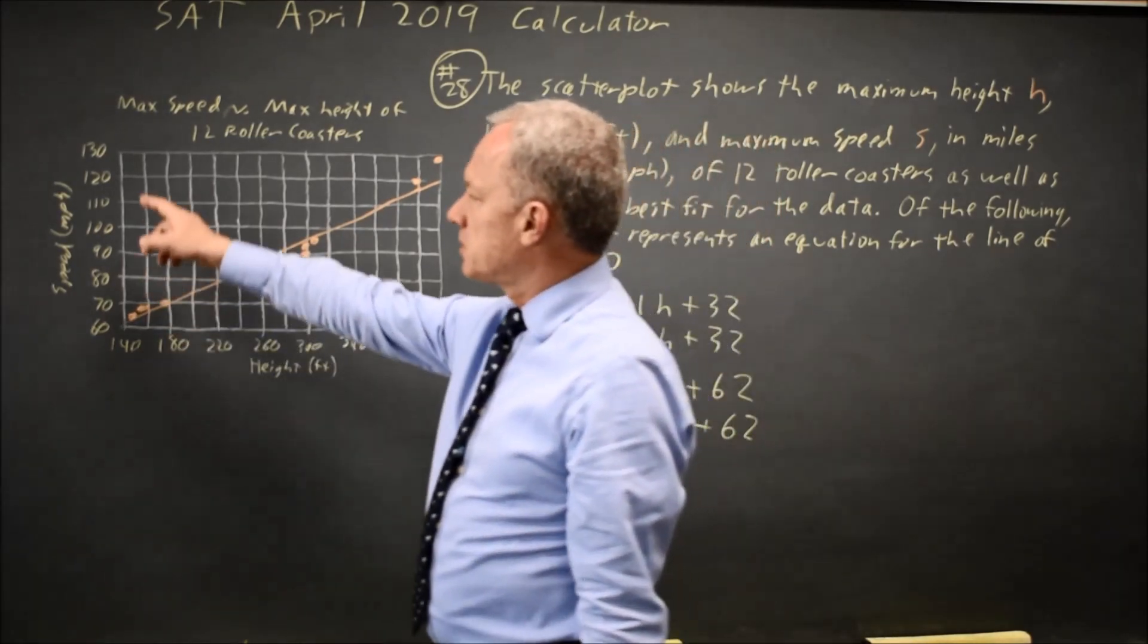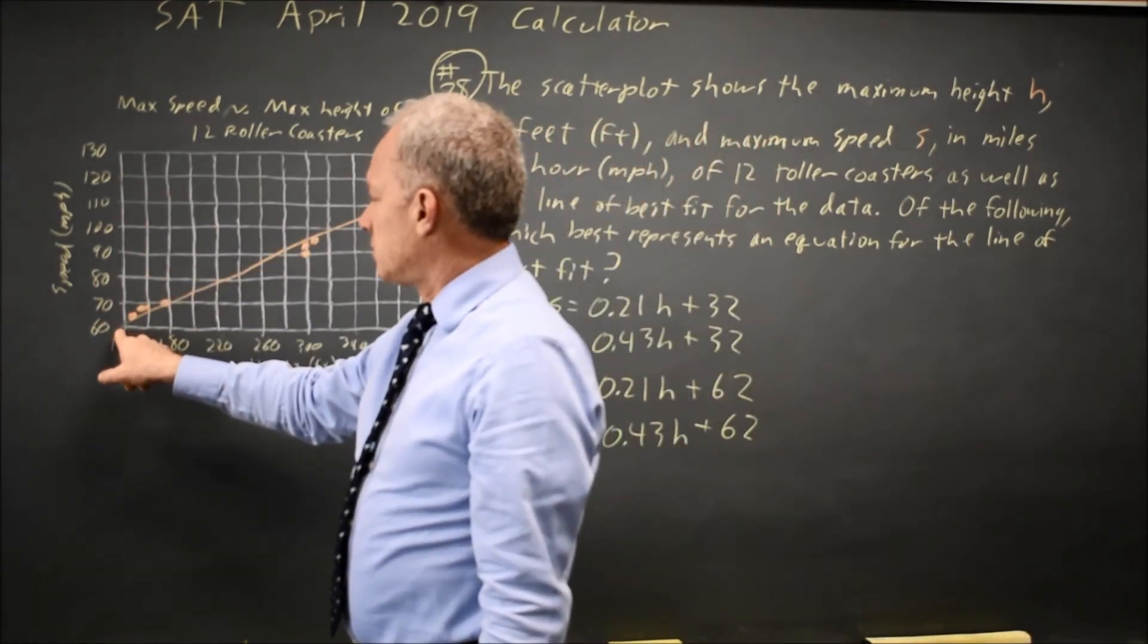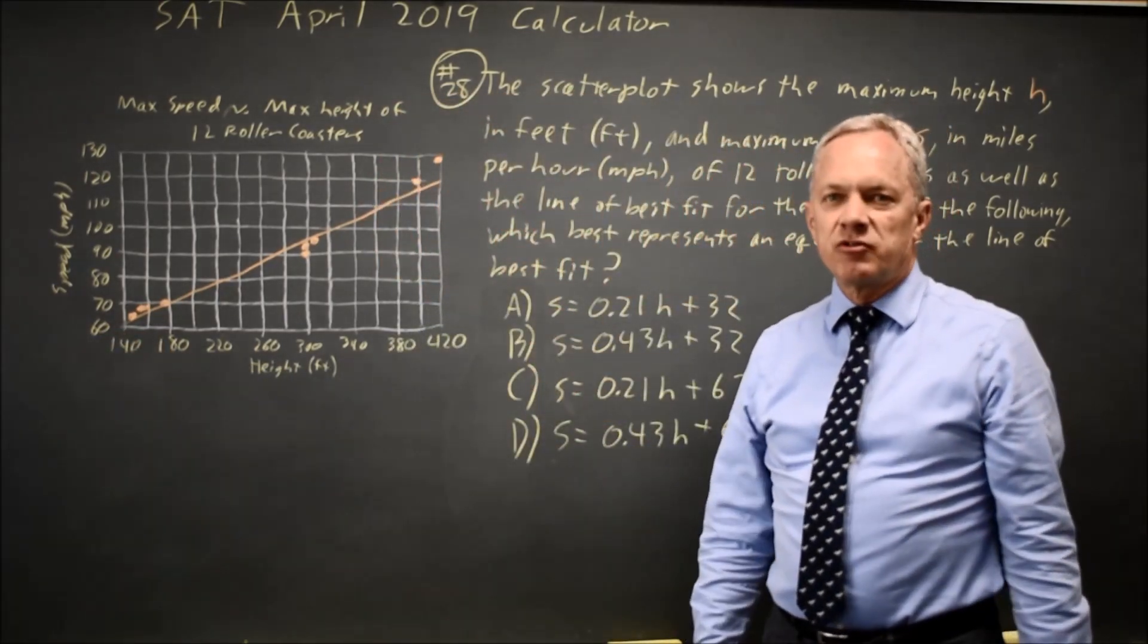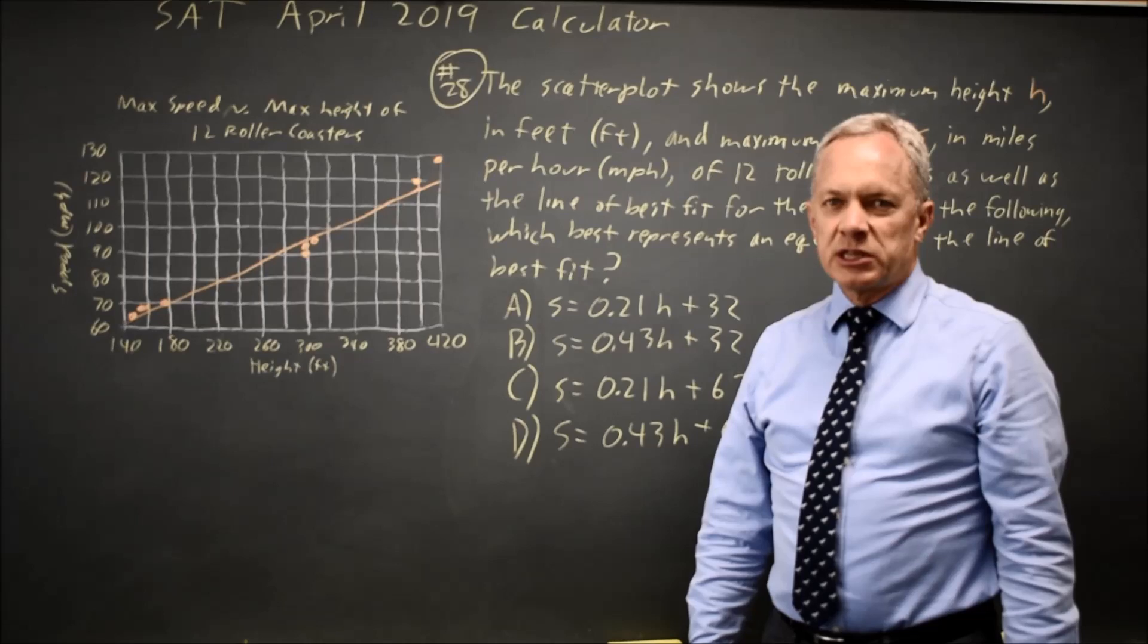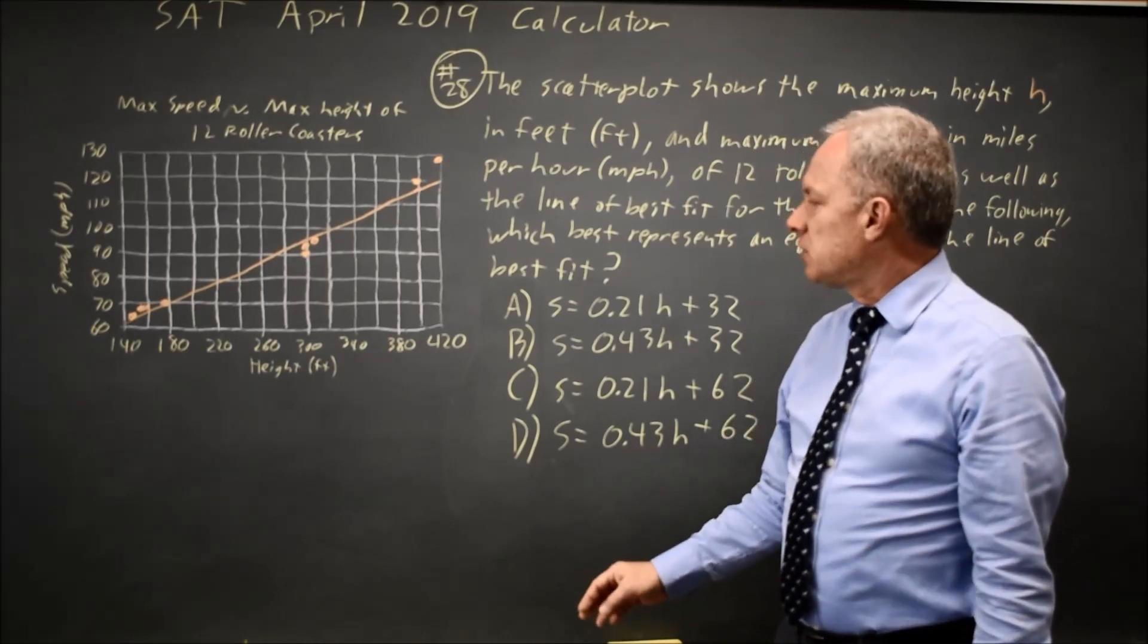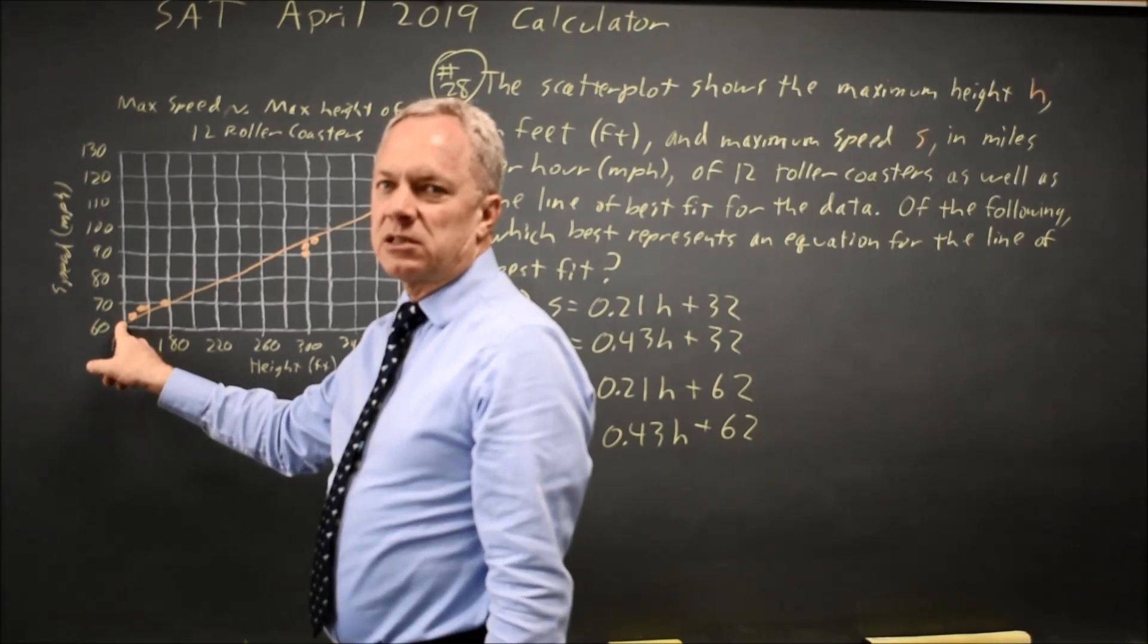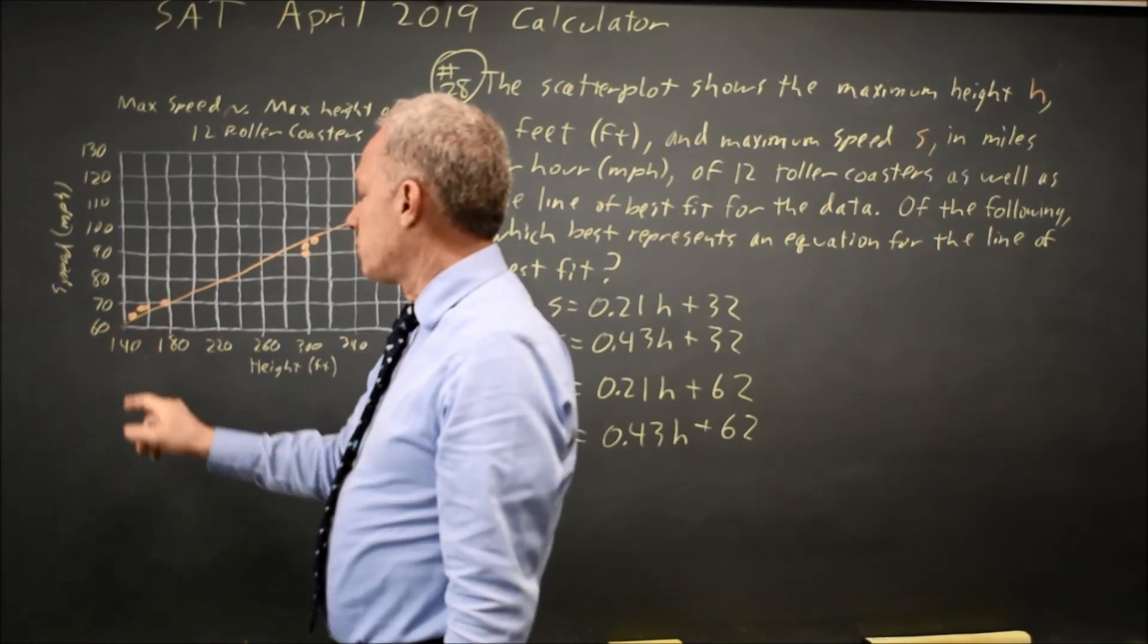It's tempting to look and say, aha, the y-intercept is just over 60, so it's C or D. It's not A or B. Find the slope, and you have the answer. But that would lead you astray because this is not the y-intercept. This is the y-value when x is 140.